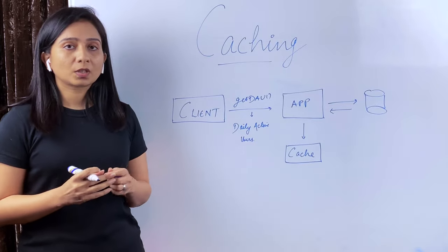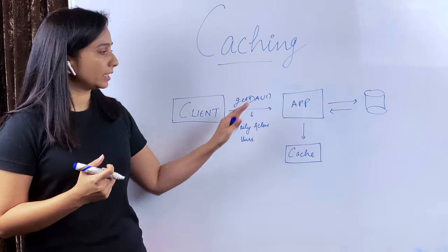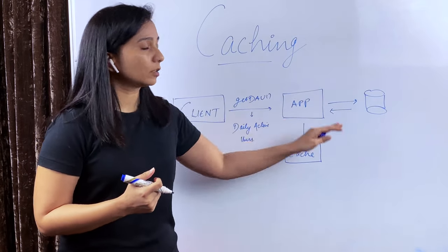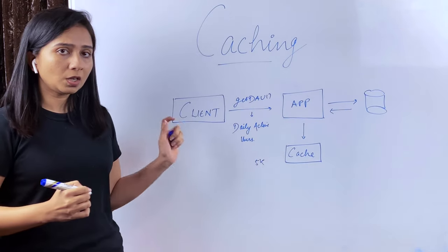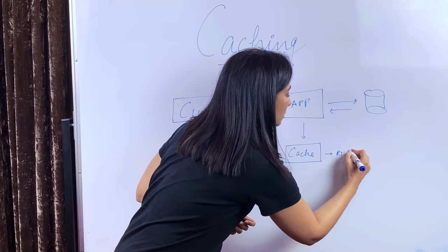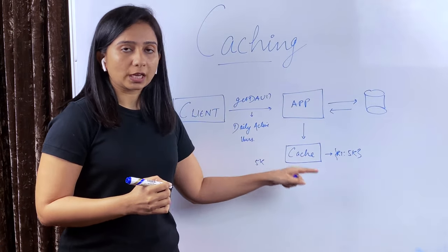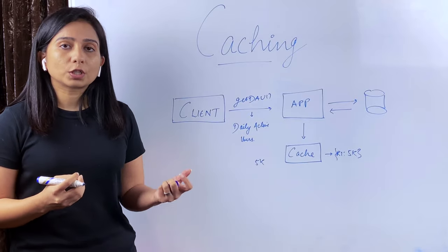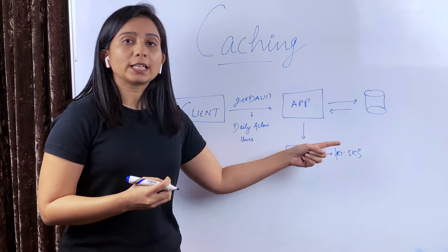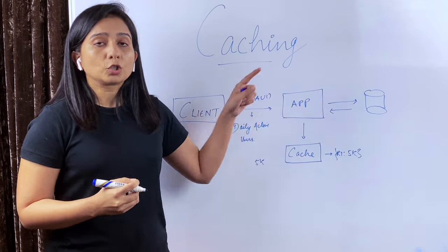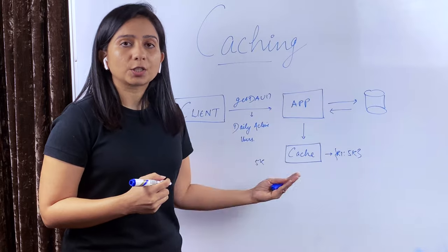For example, suppose you have a client which shows the total number of active users, and there's a request called get daily active users. This fetches or counts active users from the database and returns the response — let's say 5K — and you save this in cache. If the same request comes again after 10 minutes, you serve 5K from cache, which is okay even though users may have increased slightly. But if the request comes after two or three hours, you cannot serve 5K because the number of users has increased a lot. So you have to remove this entry from cache and fill it with fresh data from the DB — also known as warming up the cache.